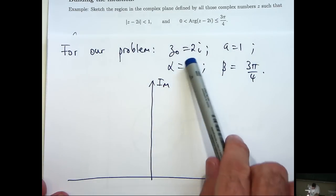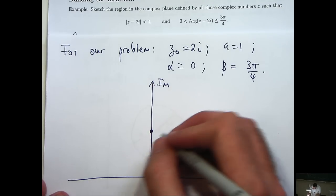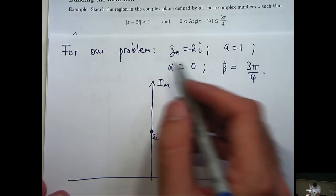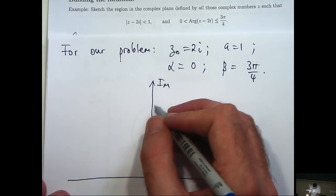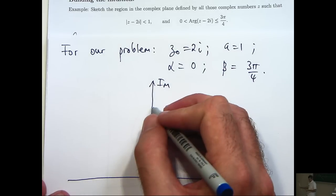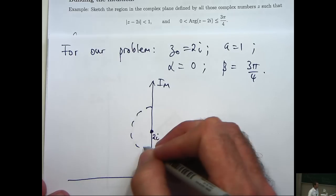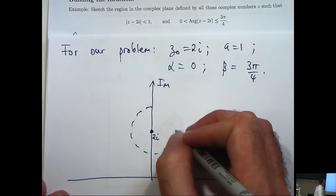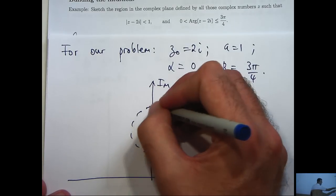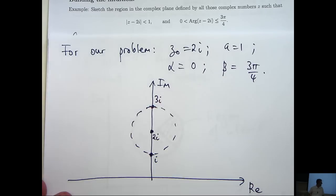Alright, so let's go up to 2i and draw a circle around 2i with radius 1. So notice I'm not going to include the edge here, so I'm going to draw a dotted line. Okay.